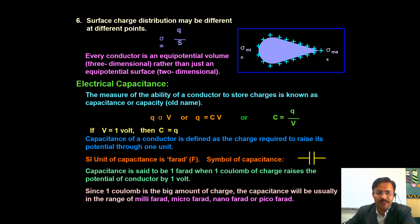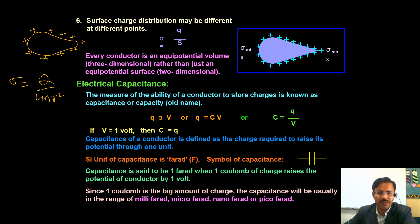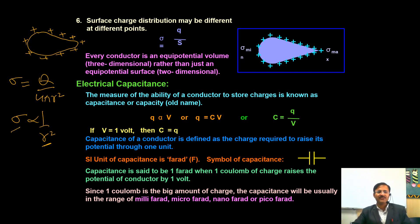The last property: charge density on a conductor is not uniform if the shape is not uniform. Surface charge density σ equals charge per unit area, which depends on shape (4πr², πr², 2πrl, etc.). Since σ is inversely proportional to r², and the radius of curvature varies from surface to surface on an irregular conductor, the surface charge density cannot be uniform.